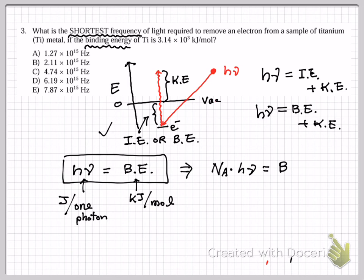It will be the same as the binding energy. Therefore, the smallest frequency ν will be binding energy, which is given as 3.14 × 10^3 kilojoules - I want to convert it into joules.